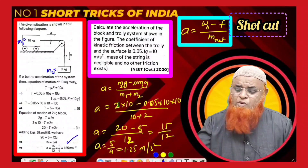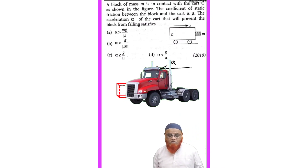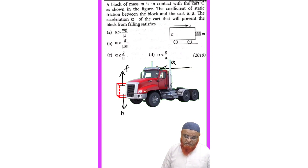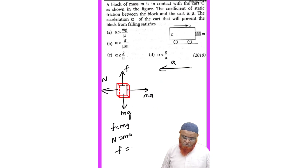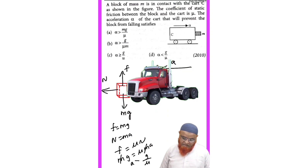What are the forces acting on a block placed against the front wall of a lorry moving forward? A pseudo force acts in the backward direction, friction acts upward, and mg acts downward. So f = mg and N = ma. Since f = μN, we get mg = μ·ma, so acceleration = g/μ. Therefore acceleration must be greater than or equal to g/μ, making option C correct.